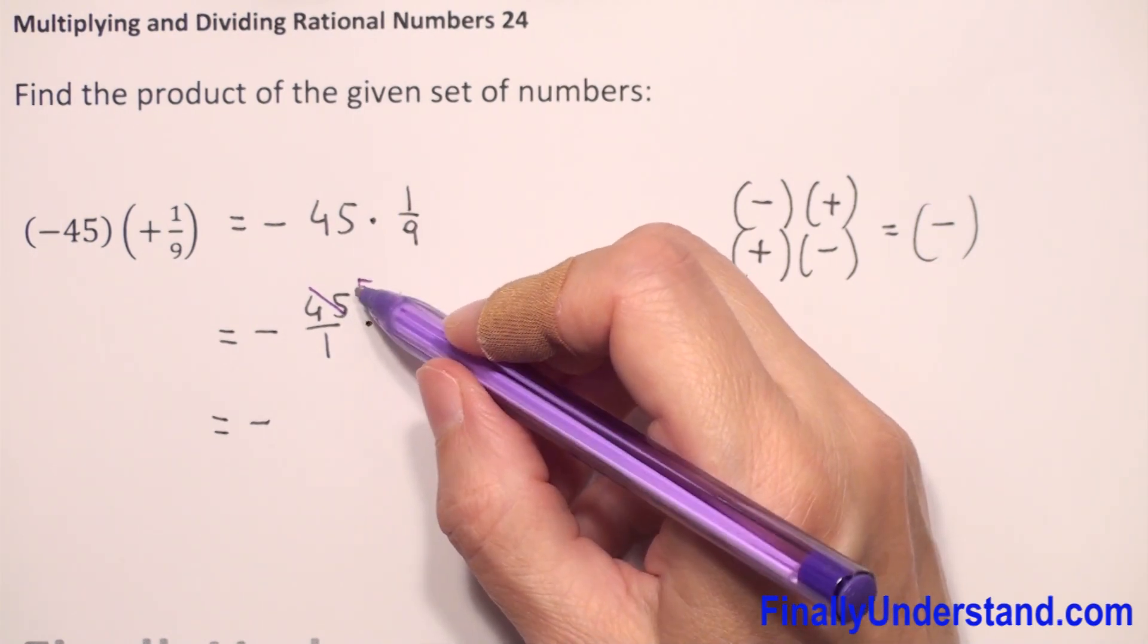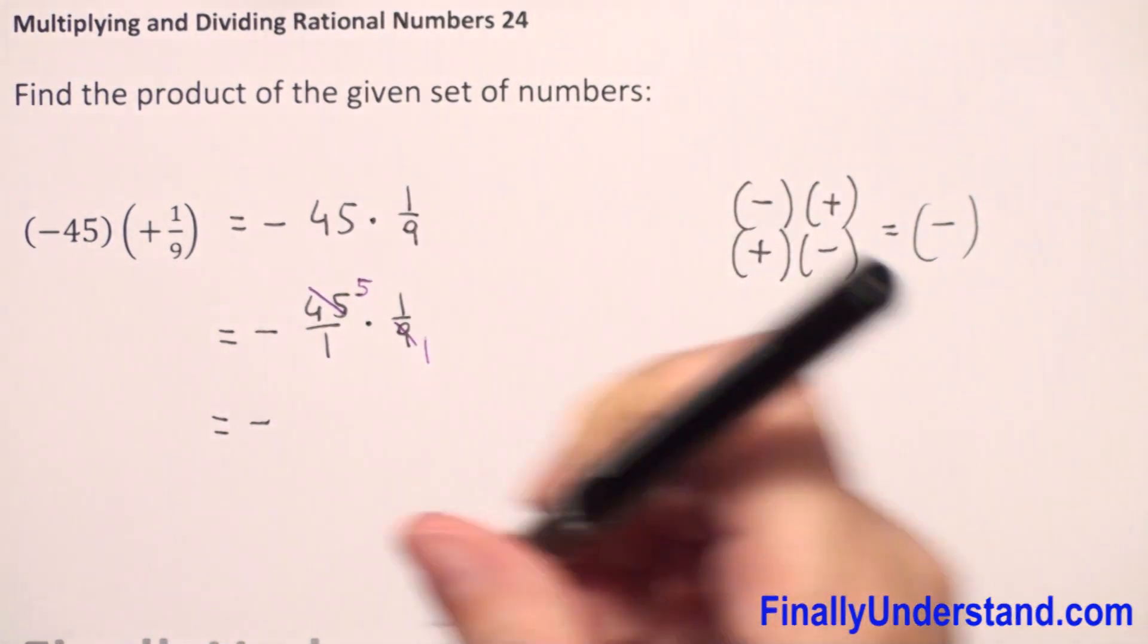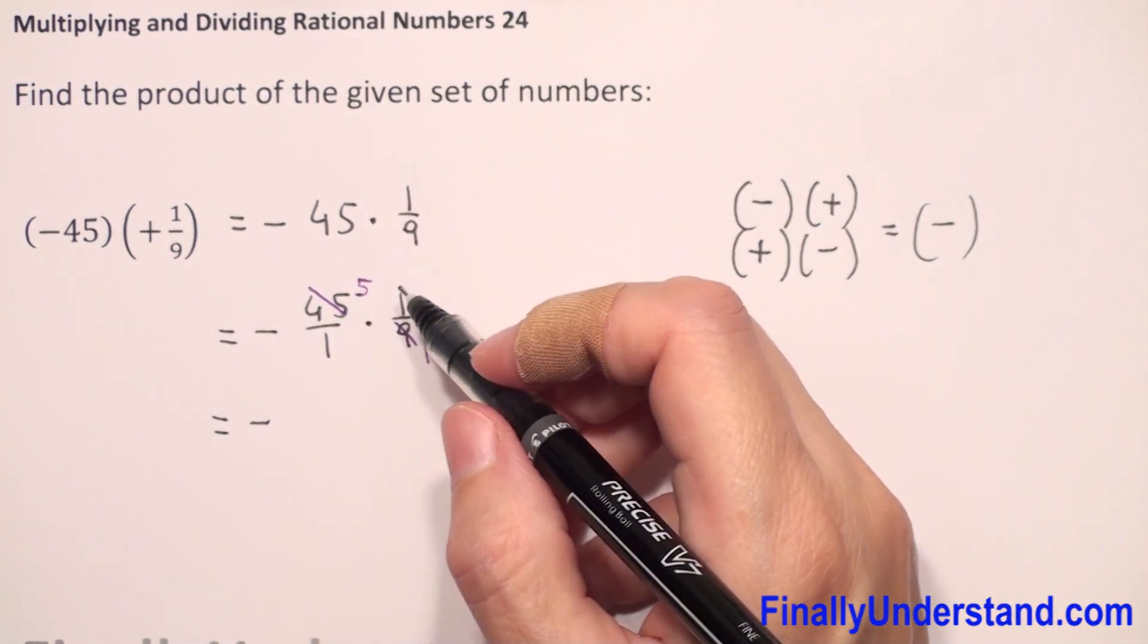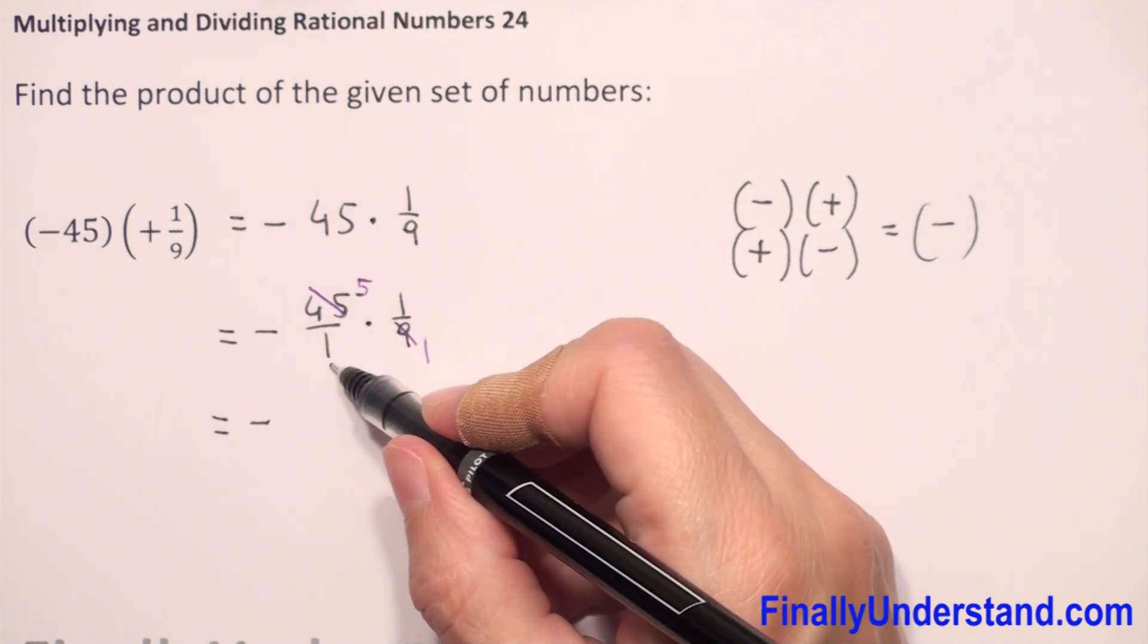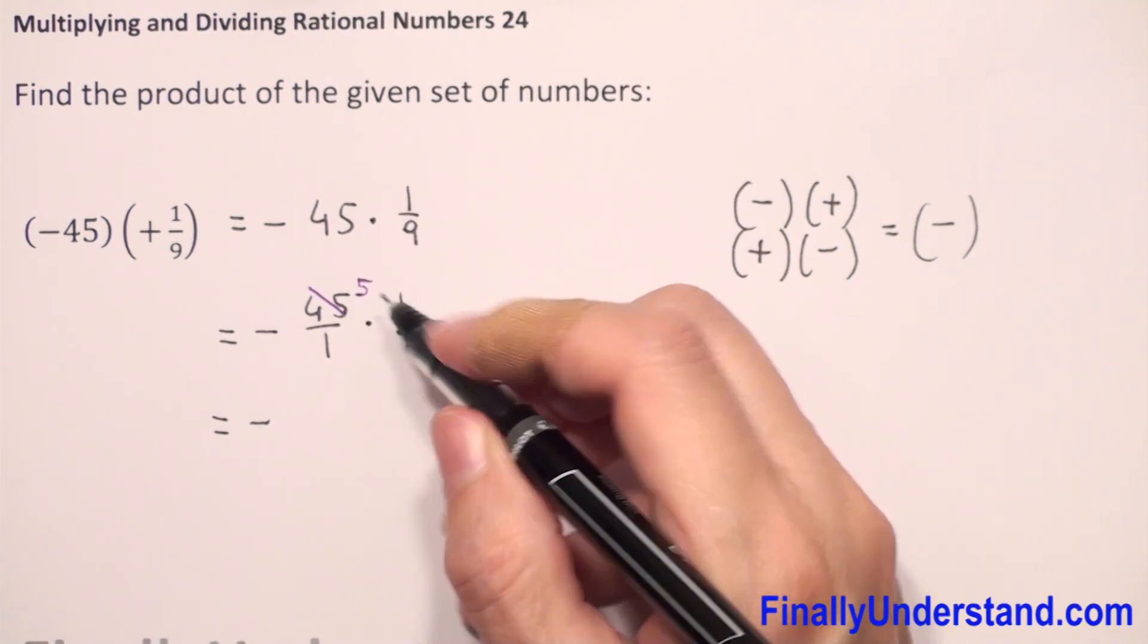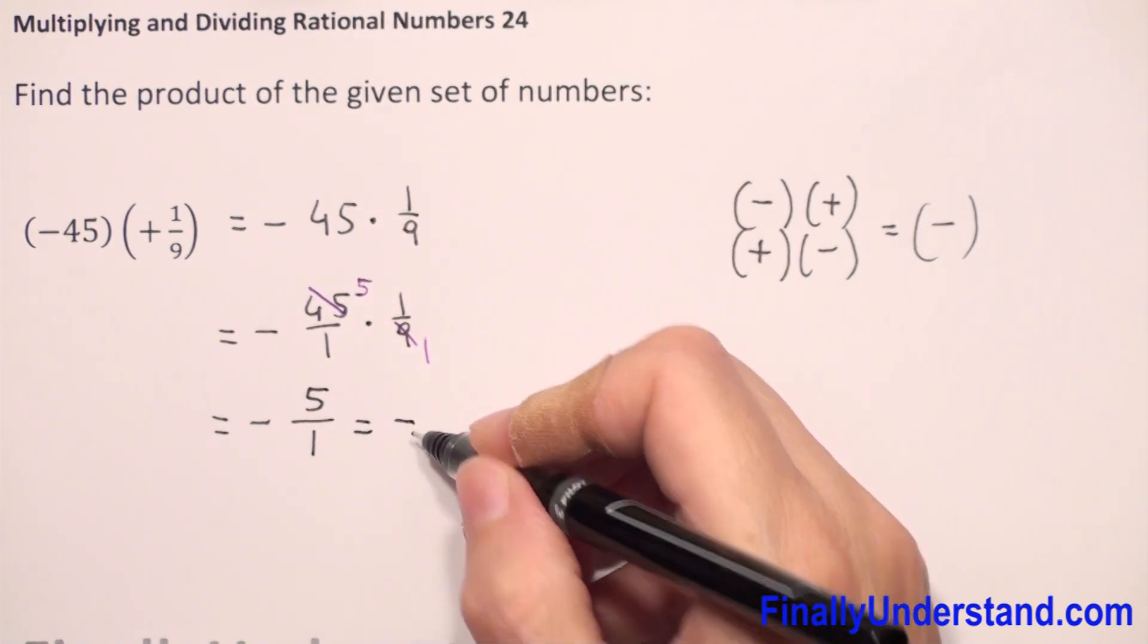So now we have multiplication of fractions. We multiply numerator times numerator, denominator times denominator. So 5 times 1 is 5, 1 times 1 is 1. Negative sign we copy. 5 divided by 1 is 5.